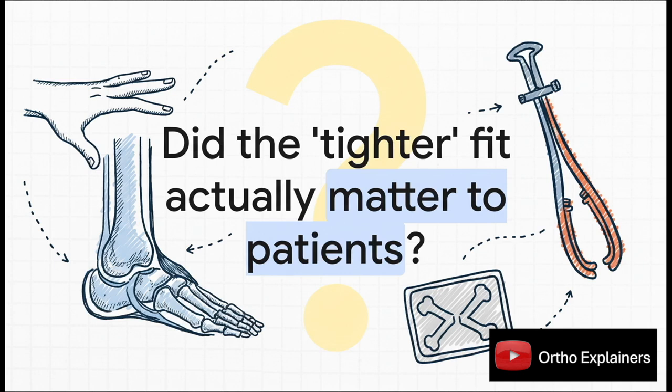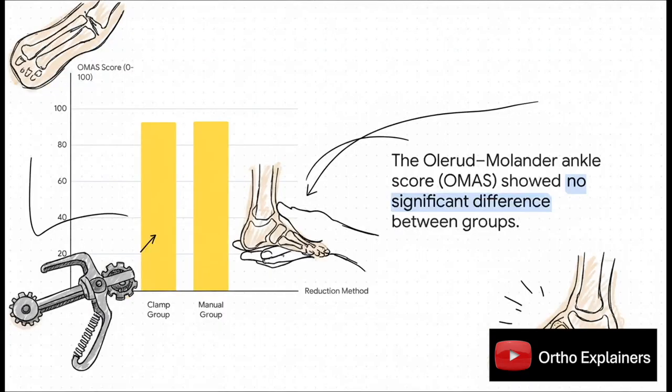But here's the million-dollar question. So the x-ray looked a little bit tighter. Did that tiny difference, we're talking less than a millimeter, actually make any difference in the real world? Did the patients in that tighter clamp group actually recover better? Do they have less pain? And the answer, as this chart just shows so beautifully, was a massive no. What you're looking at here is a functional score for the ankle, where 100 is a perfect outcome. Now look at those numbers. The clamp group scored a 92.8, and the manual, hands-on group, 93.3. They are, for all intents and purposes, exactly the same. It's a statistical tie.